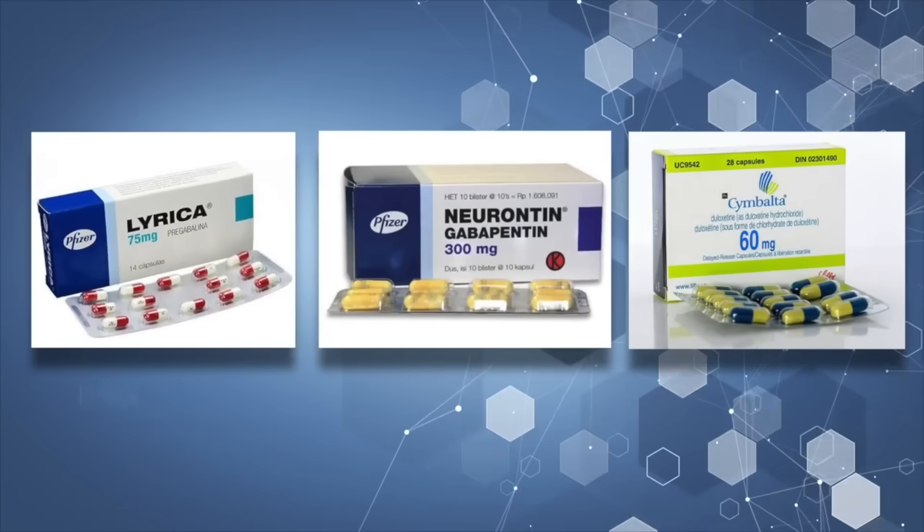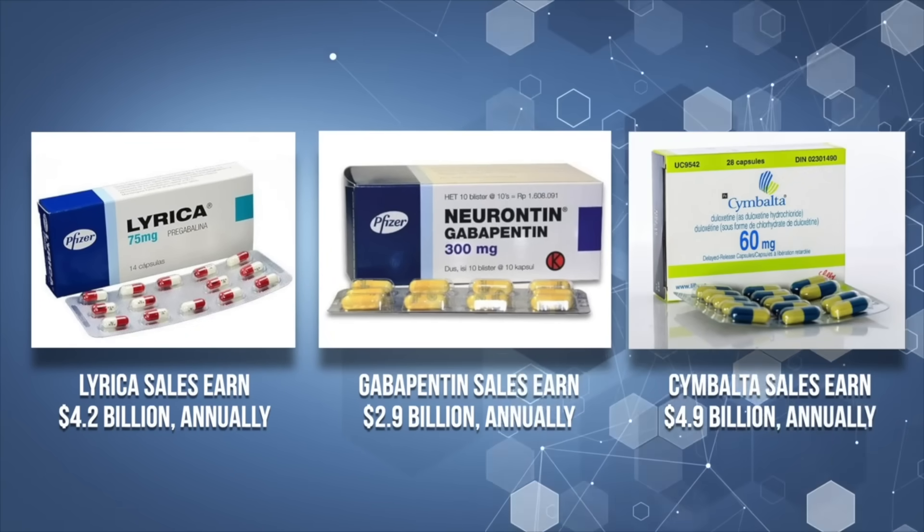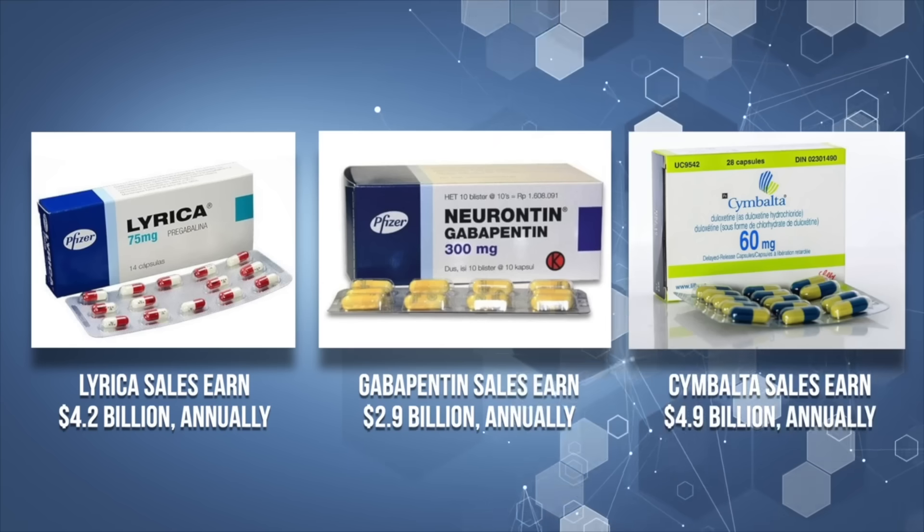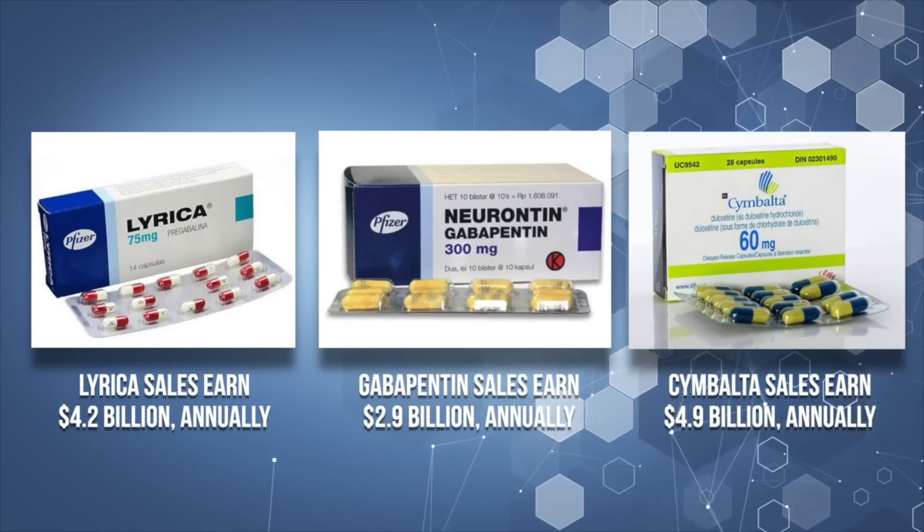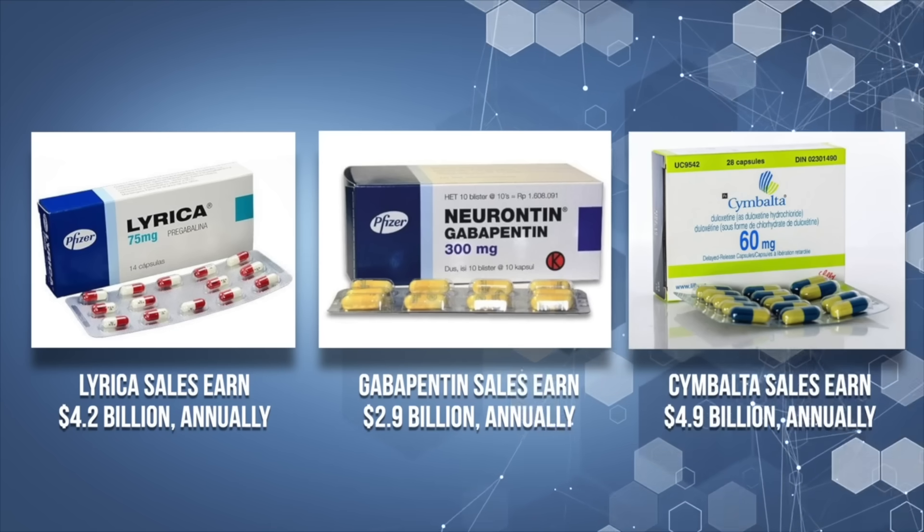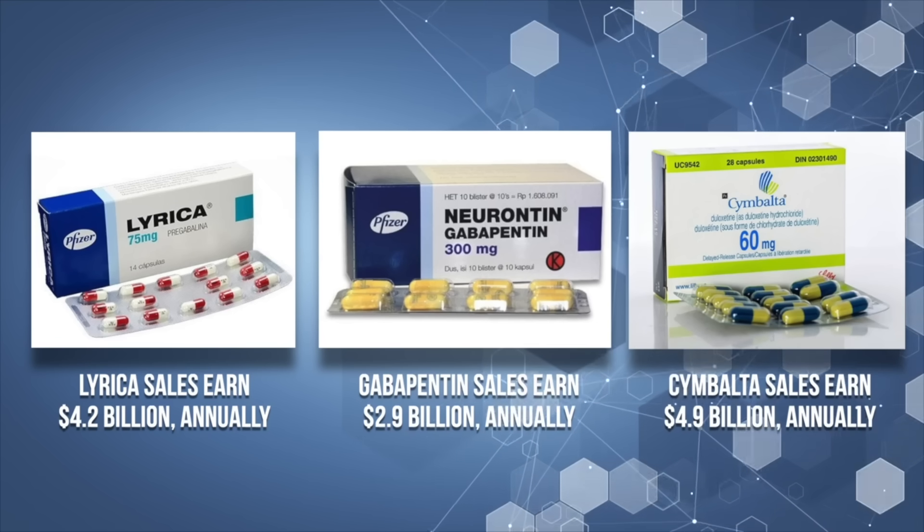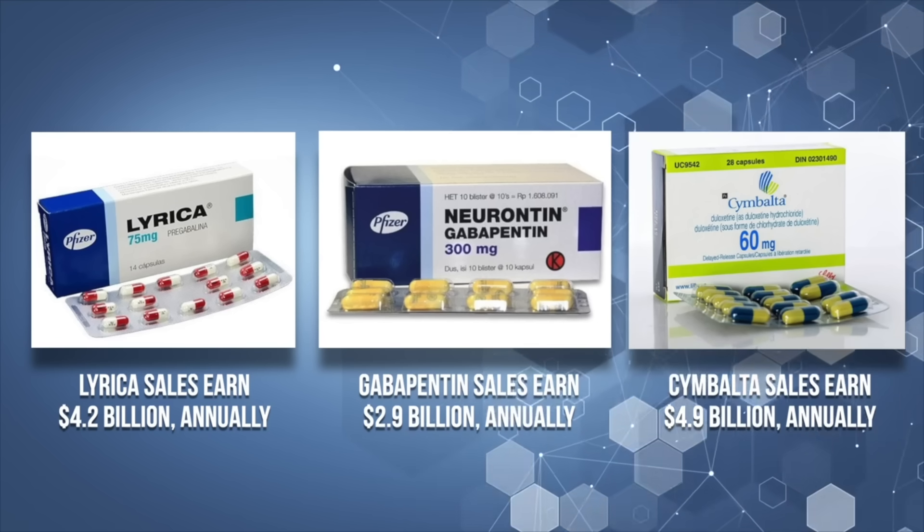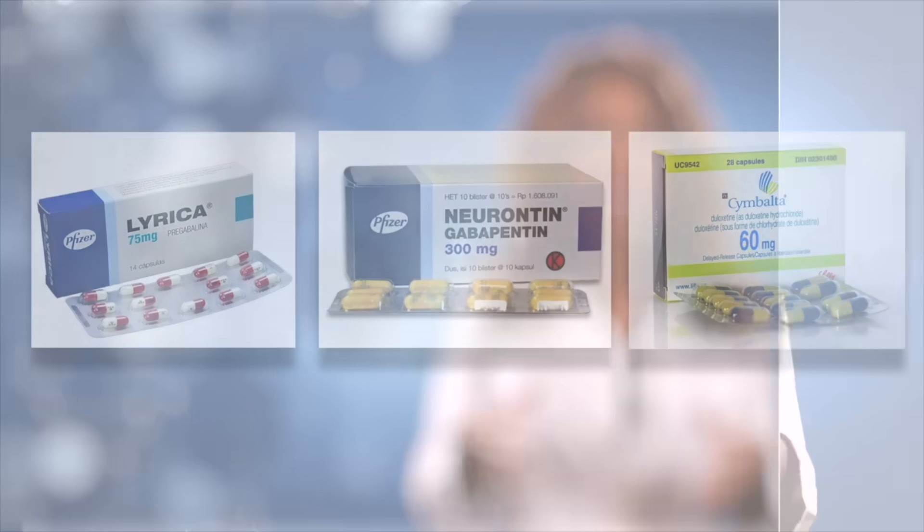The leading medications used to treat peripheral neuropathy are Lyrica, Gabapentin, and Cymbalta. Lyrica sales annually earn 4.2 billion dollars. Sales for Gabapentin average 2 billion dollars annually, and Cymbalta sales average 4 billion dollars every year. After looking at these figures, do you think the pharmaceutical companies want you to know that you have alternatives other than their medications? Of course they don't.